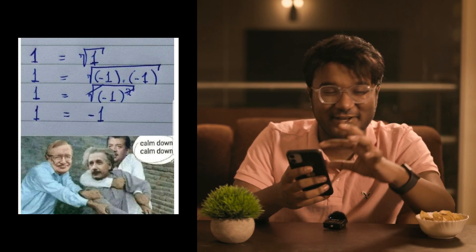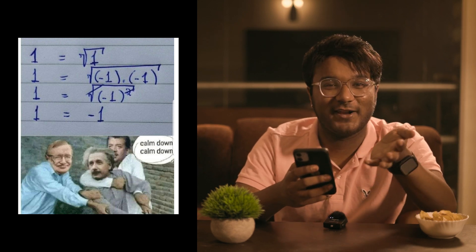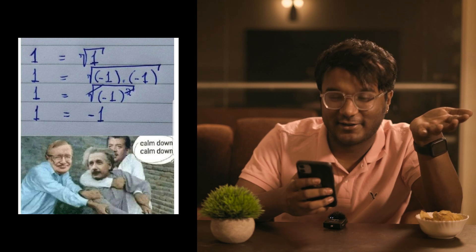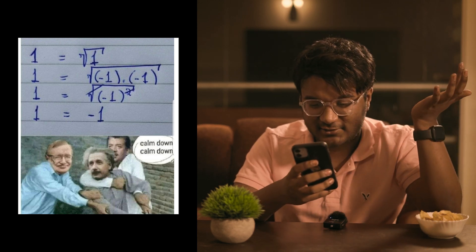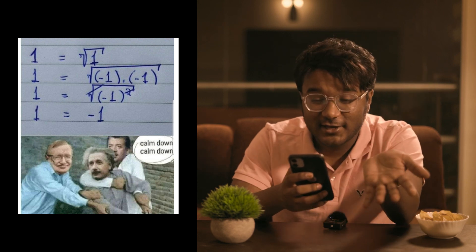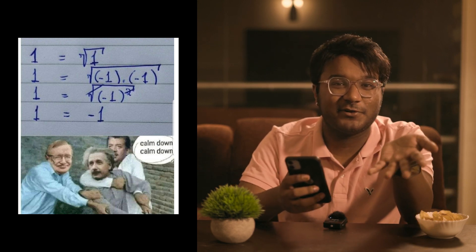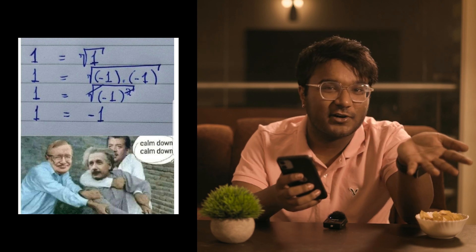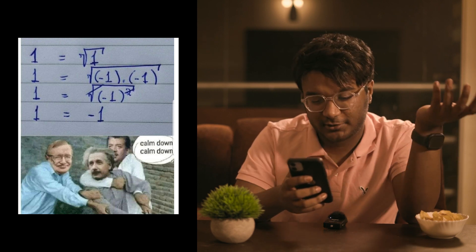Neil deGrasse Tyson — this is a very famous template in the science communities, featuring Stephen Hawking, Albert Einstein, and Neil deGrasse Tyson. Albert Einstein is losing it because one is not equal to minus one. If one was equal to minus one, then two would equal zero. If two was equal to zero, I could give you zero chocolates, tell you I gave you two, and charge you two dollars for it.